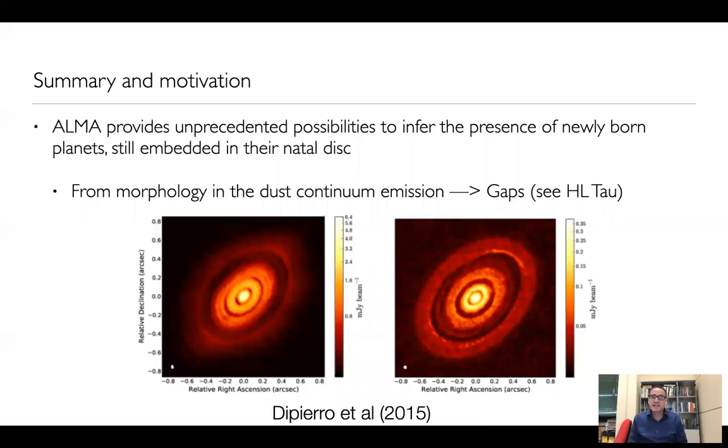To start, we know that ALMA is providing us with unprecedented possibilities to infer the presence of newly born planets that are still embedded in their natal disks. And of course, being this conference to celebrate the anniversary of the HL Tauri image, I have to show the image of HL Tauri as found by ALMA here on the left, and I want to compare it with our own modeling actually done by another student of mine, Giovanni Dipierro, back in 2015, where we model the system of gaps and rings in terms of the presence of three Saturn-mass planets that are embedded in the disk.